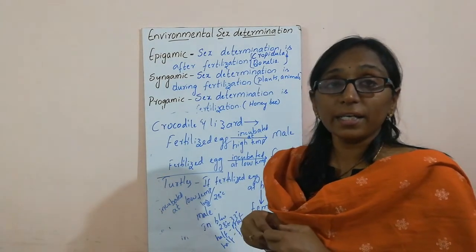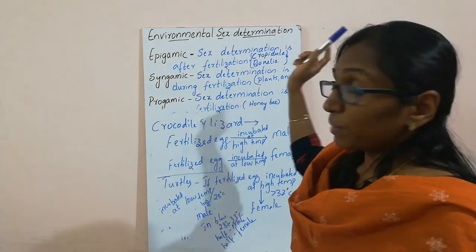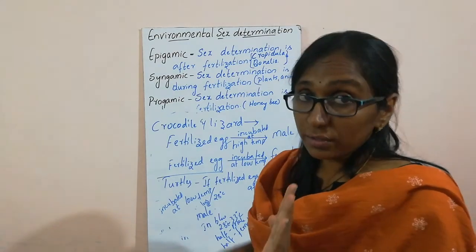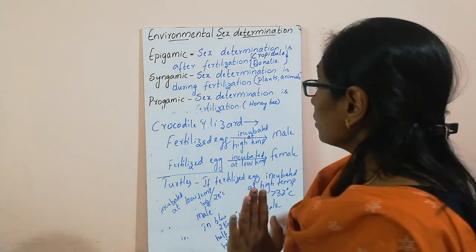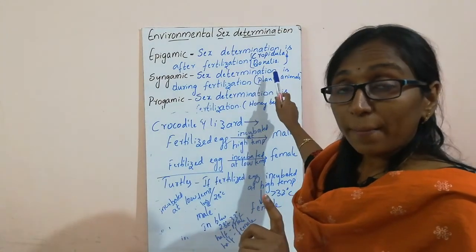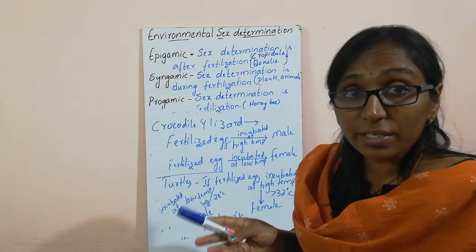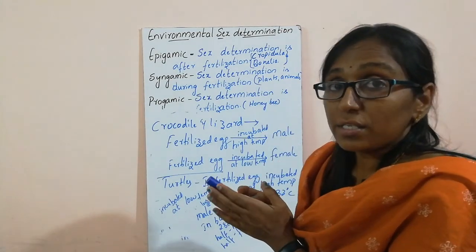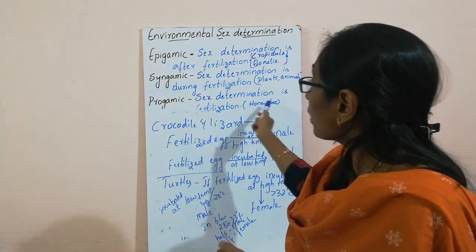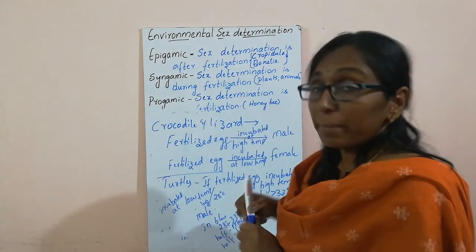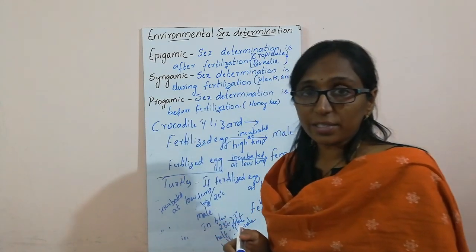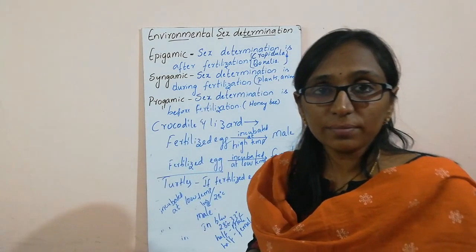These are the examples we can take under environmental sex determination, all showing epigamic type — sex determined after fertilization. Syngamic type of sex determination is seen in most plants and animals, where sex is determined during fertilization itself due to chromosomal distribution. And pro-gamic type, where sex determination is before fertilization, is seen in honeybee. Thank you for this session.